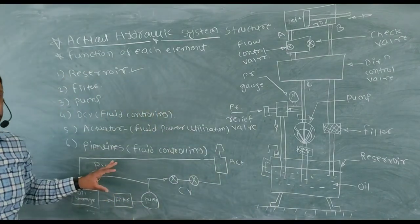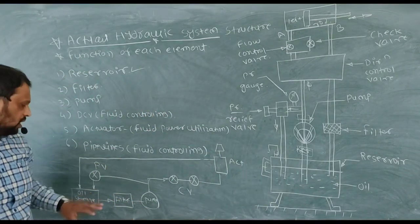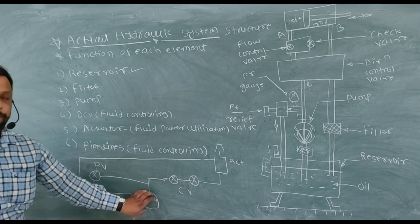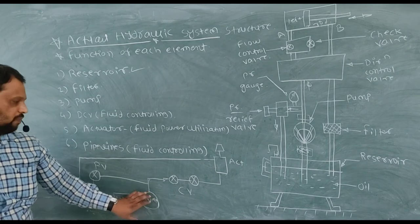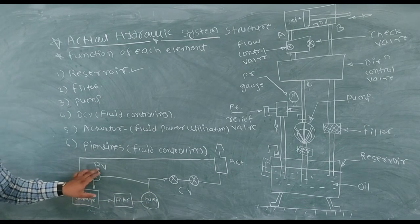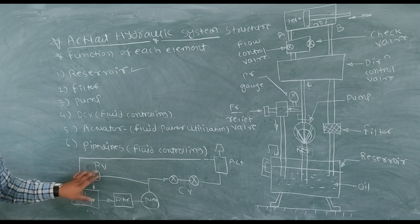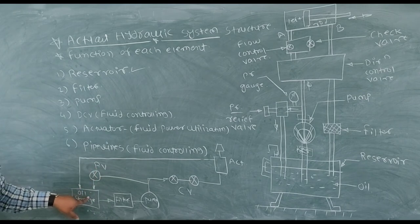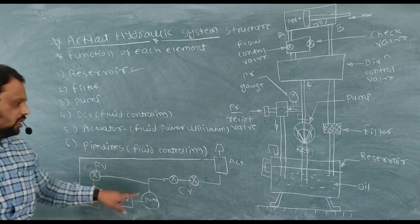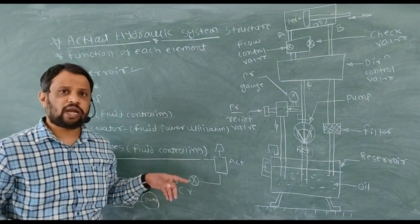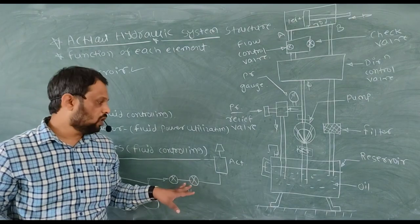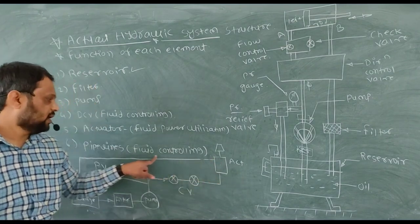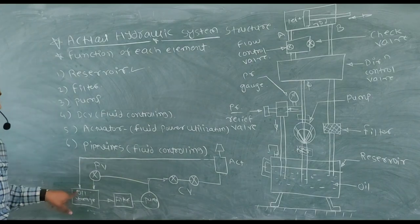Now the flowchart. Oil storage, then filter, then pump. If extra pressure is present, a protective valve releases it back to the tank. Then the control valves — flow control valve and direction control valve — and then your actuator. Oil then returns to your tank again. This is the complete hydraulic system flowchart.